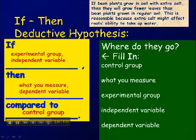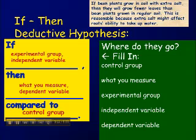If bean plants grow in soil with extra salt, then they will grow fewer leaves than — t-h-a-n — bean plants grown in regular soil. That word 'than' has the control group coming after it. Notice there are two words: 'then' (t-h-e-n) is part of the if-then hypothesis structure, and 'than' (t-h-a-n) is used in the extremely complete hypothesis when comparing to the control group. The next statement — 'this seems reasonable because extra salt...' — explains the rationale for the hypothesis. In science fairs you often need this rationale; you don't want your hypothesis to be a random guess. There should be a reasonable idea behind it.